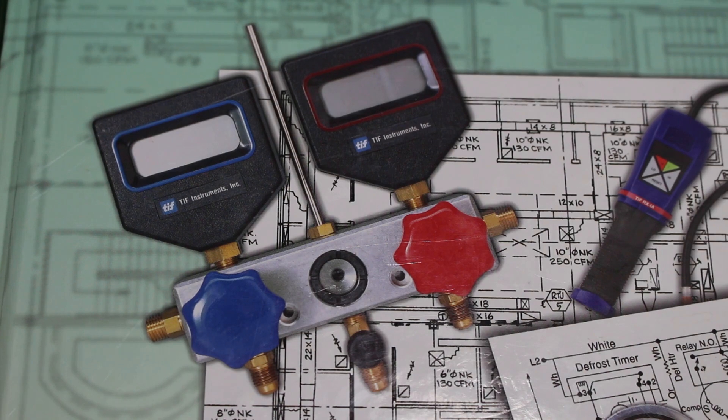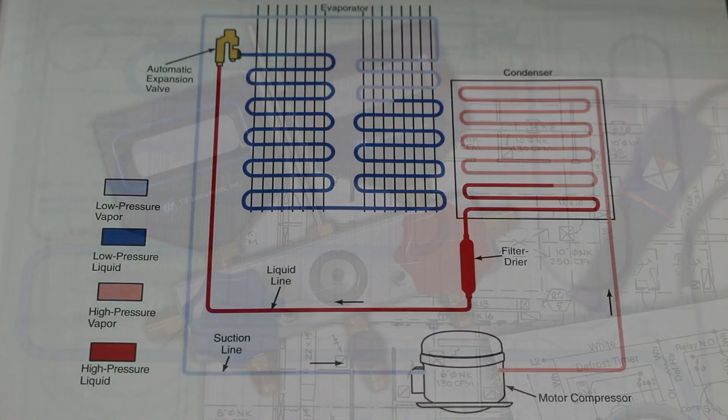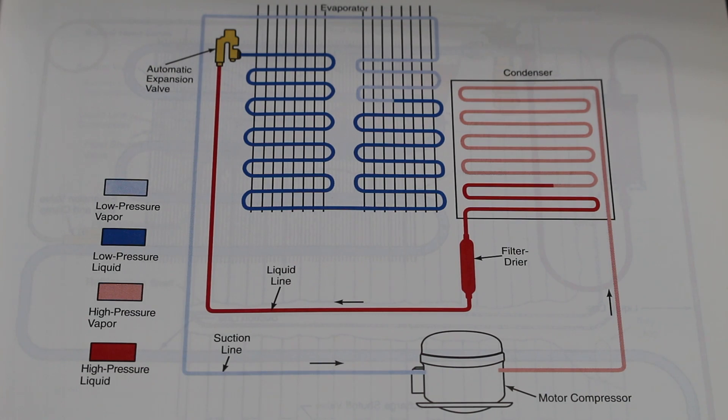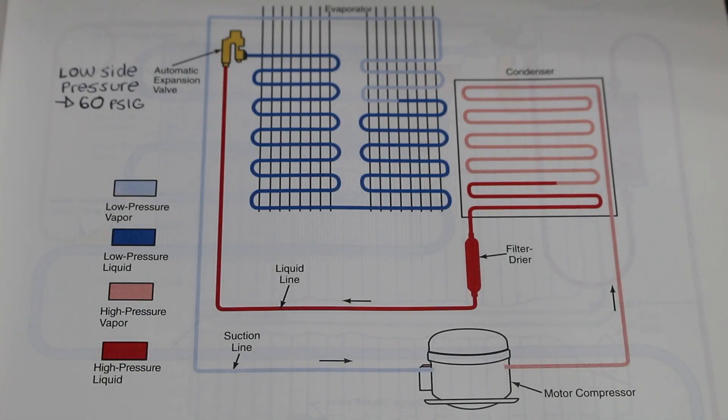We're going to begin by taking our refrigerant gauges and connecting them to our HVAC system. To calculate superheat, we're going to focus on the low side of the system. Once our gauges are connected, we're going to have our pressure readings. Let's say our low side back pressure is 60 PSIG, and we are working on a R22 system.